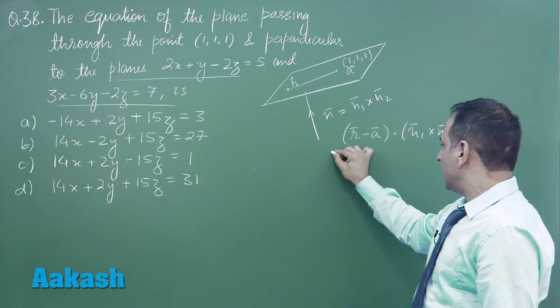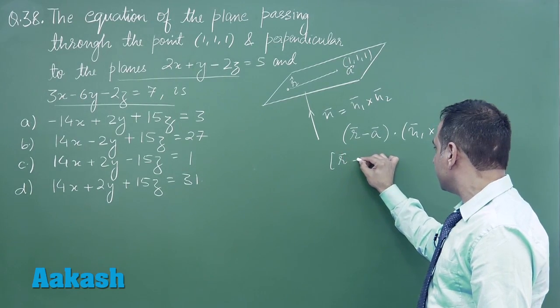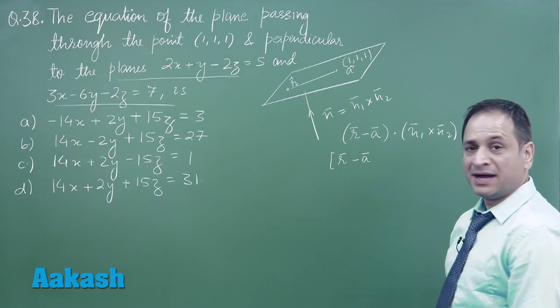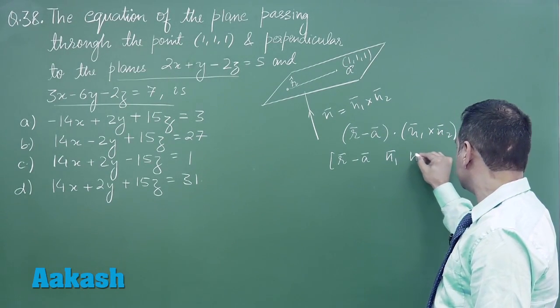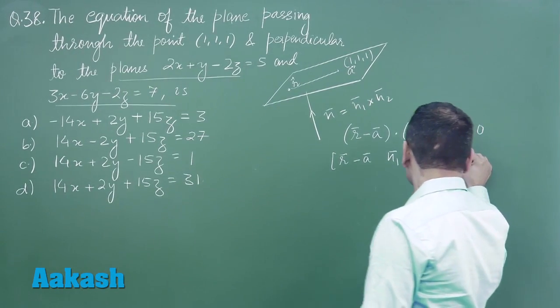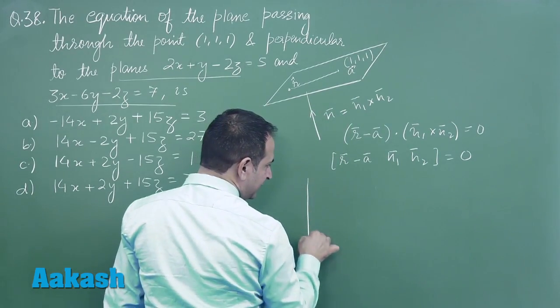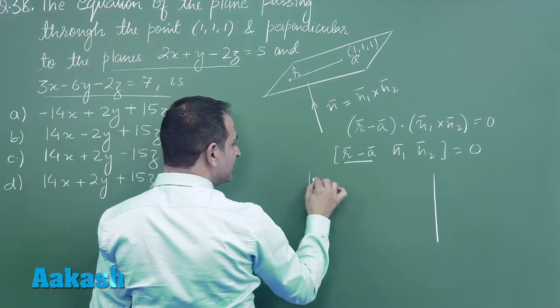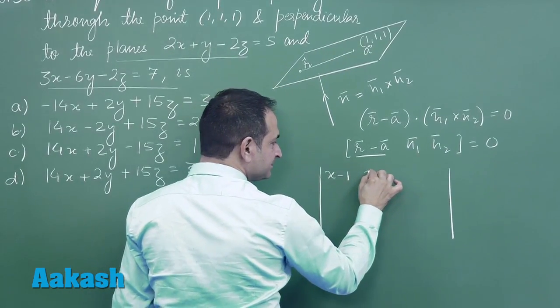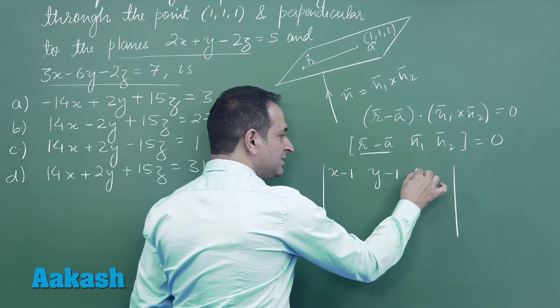Now actually this is the scalar triple product of r minus a, n1, and n2. Now this is equal to 0. So here is the determinant: r minus a will be equal to x minus 1, y minus 1, z minus 1.